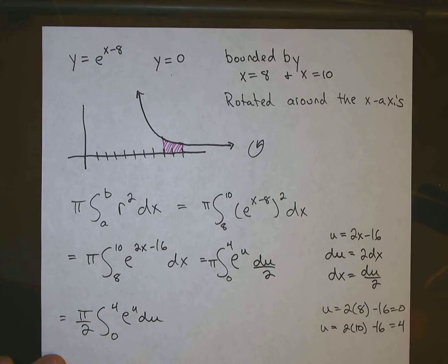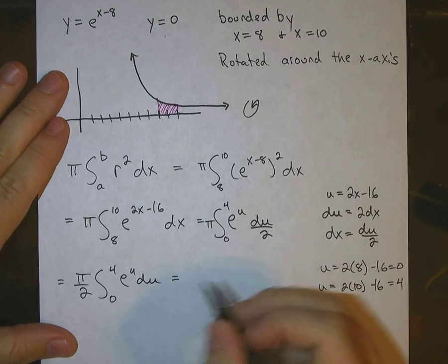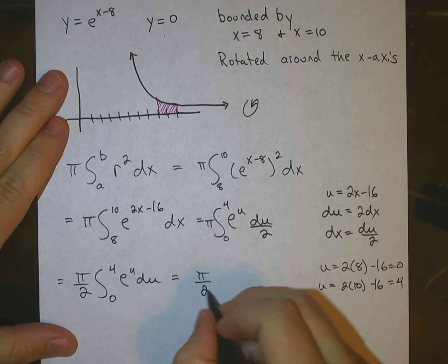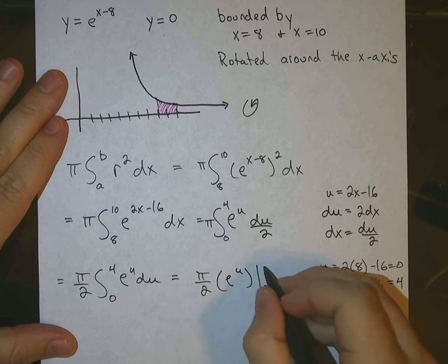The integral, or the anti-derivative of e to the u is just e to the u. So this becomes pi over 2, e to the u, evaluated from 0 to 4.